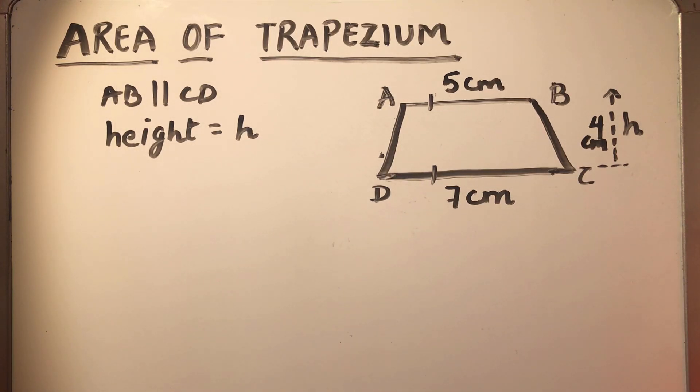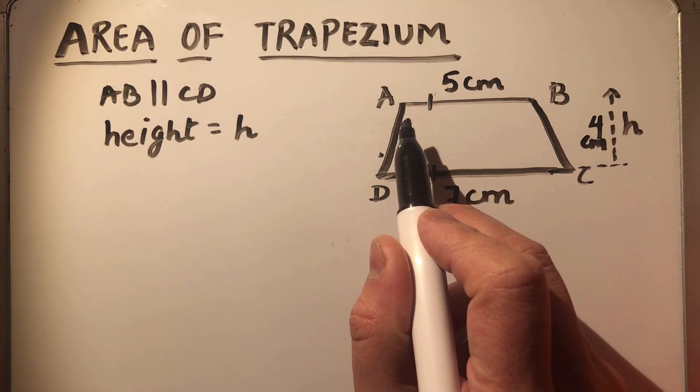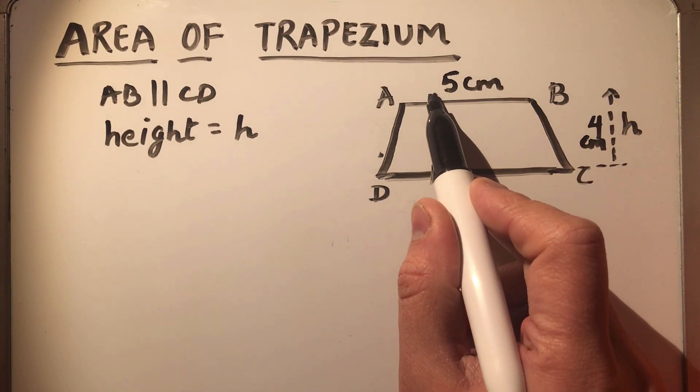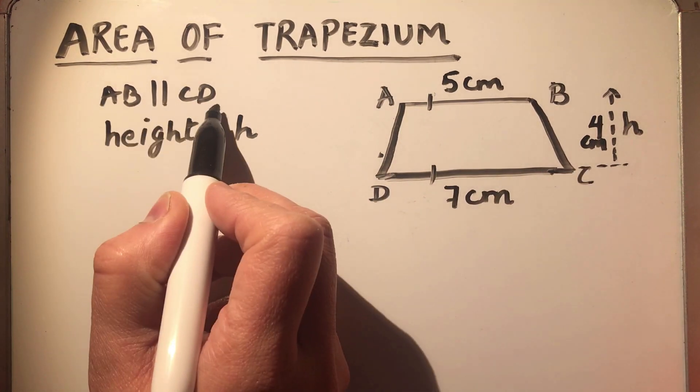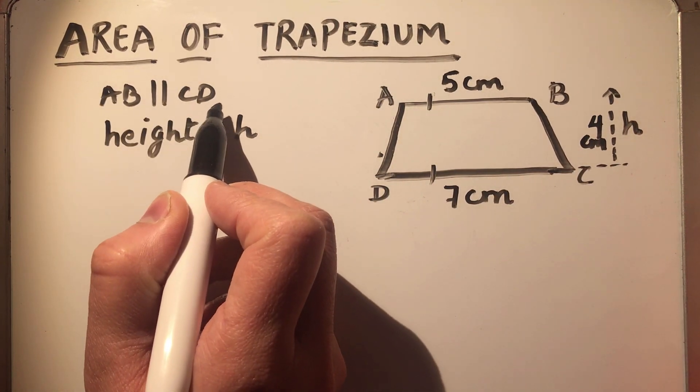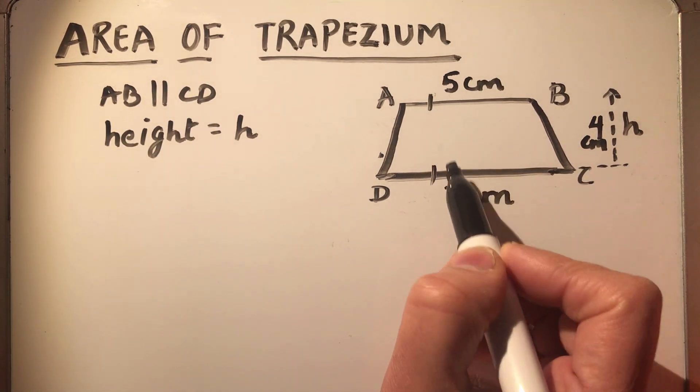Hello viewers, today we are going to learn how to find the area of trapezium. A trapezium is a quadrilateral with one pair of parallel sides. Here AB is parallel to CD. This is the pair of parallel sides.